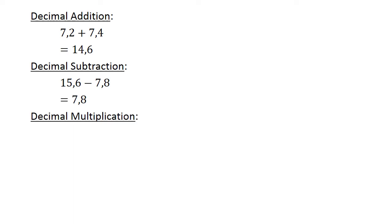Decimal multiplication: 0.5 times 0.008. First, 5 times 8 equals 40, so the answer equals 0.004.